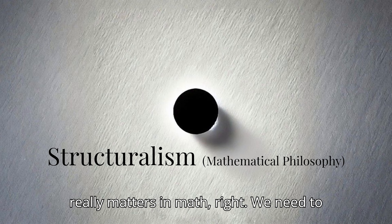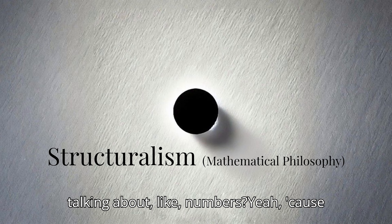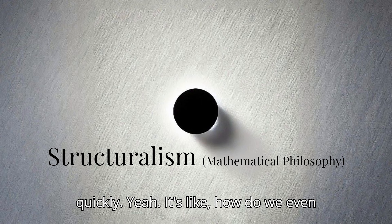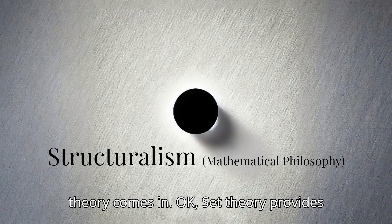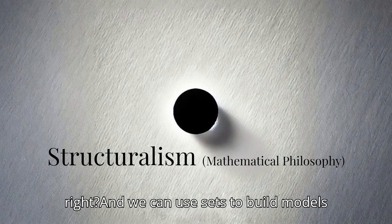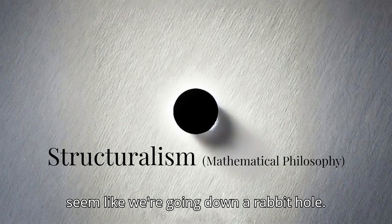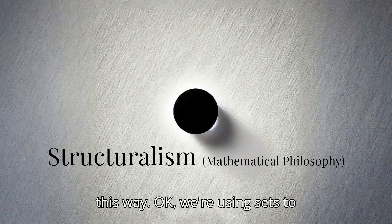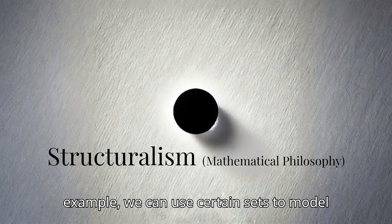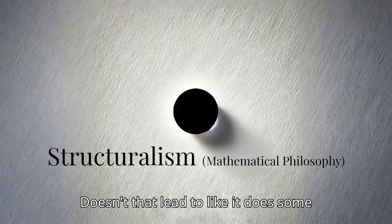If we're saying that structures are what really matters in math, we need to figure out what they're made of — what are the building blocks if we're not talking about numbers? This is where set theory comes in. Set theory provides a powerful framework for representing structures. You can think of sets as collections of objects, and we can use sets to build models of mathematical structures. That raises the question: can we have multiple set-theoretic models for the same mathematical structure?